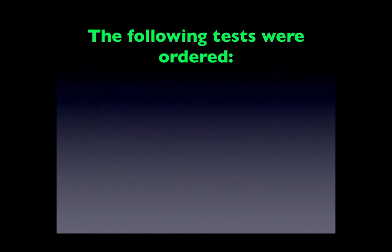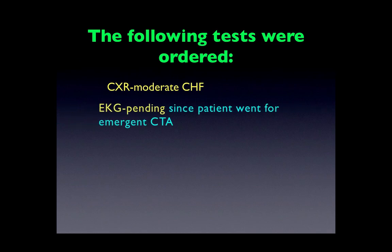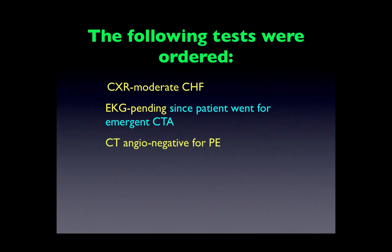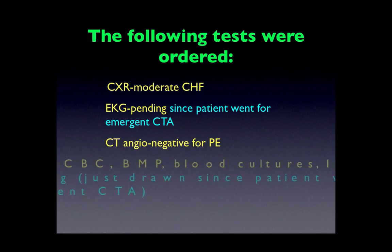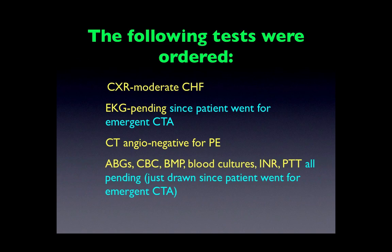The following tests were ordered. A chest x-ray was performed on a stat basis and showed moderate congestive heart failure. An EKG was ordered, but as soon as the EKG tech came to perform it, the patient was on the way to the CT angio, and it was felt that that should be given priority, so the EKG is still pending. The patient did come back and the CT angio was negative for pulmonary embolism. Once he arrived back, ABGs, CBC, BMP, blood cultures, INR, and PTT were drawn and are all pending.